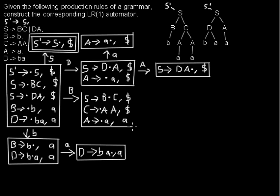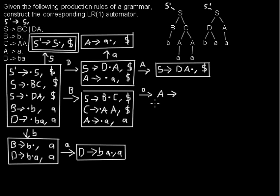From this state, we can read terminal 'a' as the next input symbol. I add another state where I move the dot over that 'a', keeping the lookahead 'a'. That's everything to add to that state.